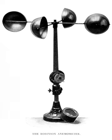On an anemometer with four cups, it is easy to see that since the cups are arranged symmetrically on the end of the arms, the wind always has the hollow of one cup presented to it and is blowing on the back of the cup on the opposite end of the cross. Since a hollow hemisphere has a drag coefficient of 0.38 on the spherical side and 1.42 on the hollow side, more force is generated on the cup presenting its hollow side to the wind. Because of this asymmetrical force, torque is generated on the axis of the anemometer, causing it to spin.